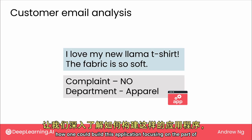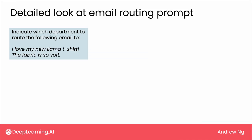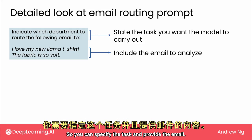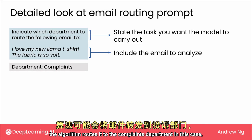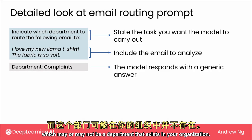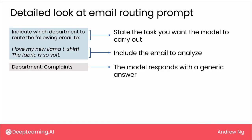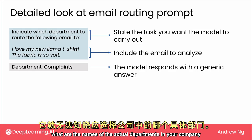Let's take a deeper look at how one could build this application, focusing on deciding what department to route an email to. One thing you could do is write a prompt telling the LLM to read the email and decide which department to route it to — specifying the task and providing the email. But with a prompt like this, you may find the algorithm routes it to a 'complaints department,' which may or may not be a department that exists in your organization. This is an example where the LLM has been given insufficient context about the actual department names in your company.